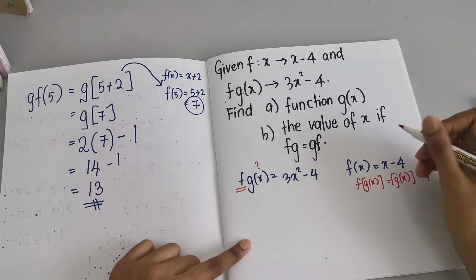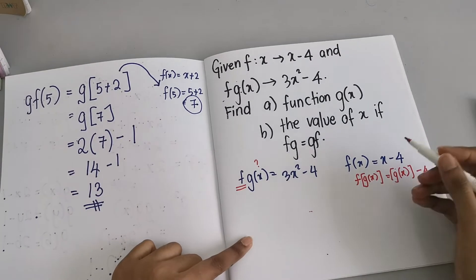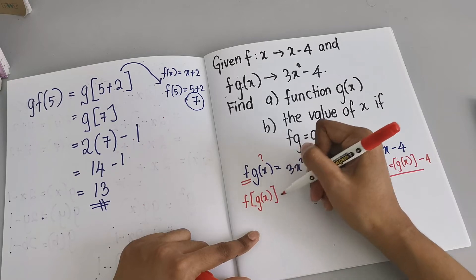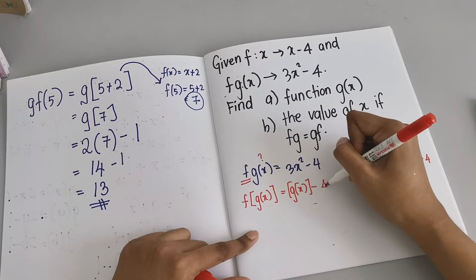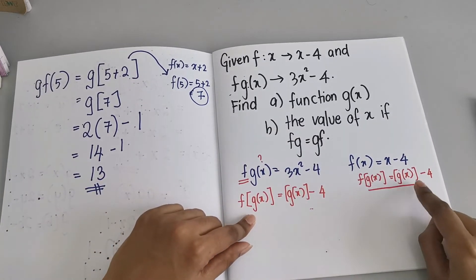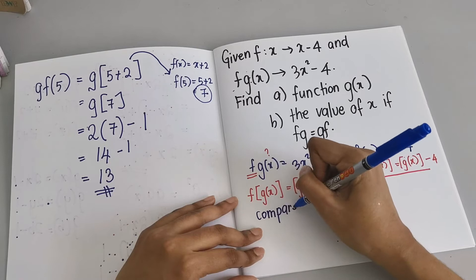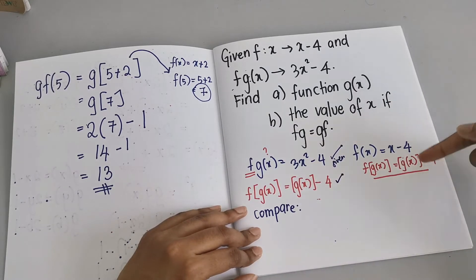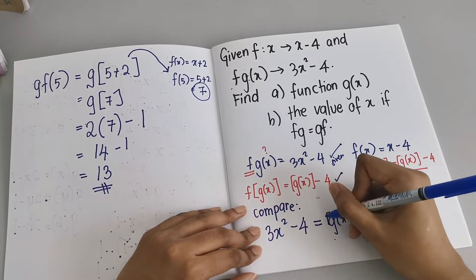We need to understand that if f(x) = x − 4, then f(g(x)) must look like g(x) − 4, because we just replace x with g(x). So f(g(x)) = g(x) − 4. Now we compare: the given fg(x) = 3x² − 4, and what we just wrote: g(x) − 4.